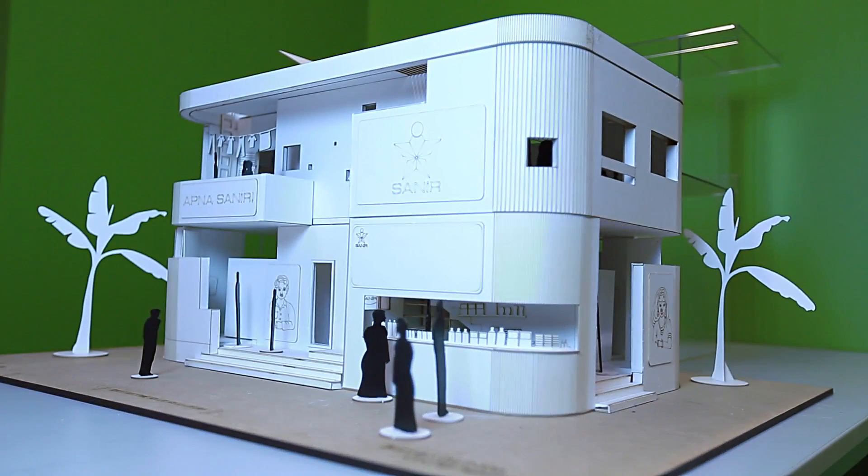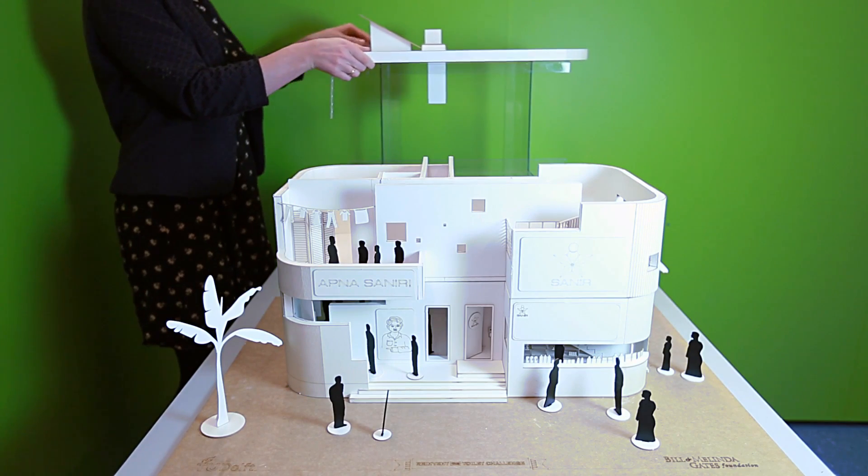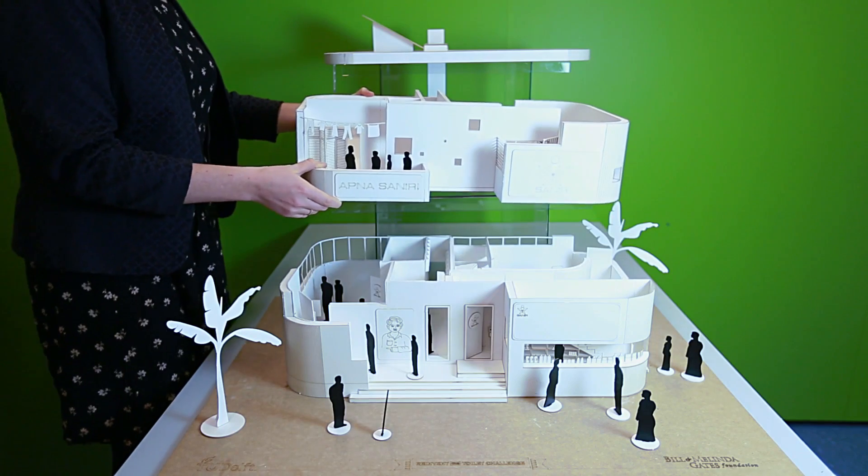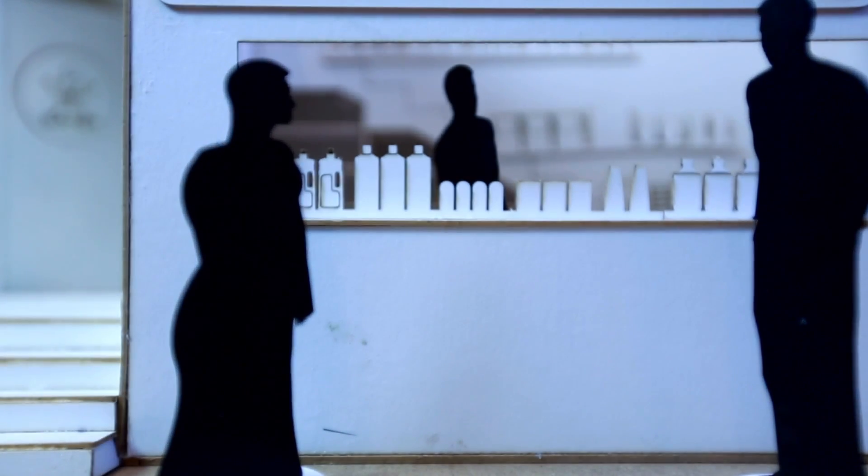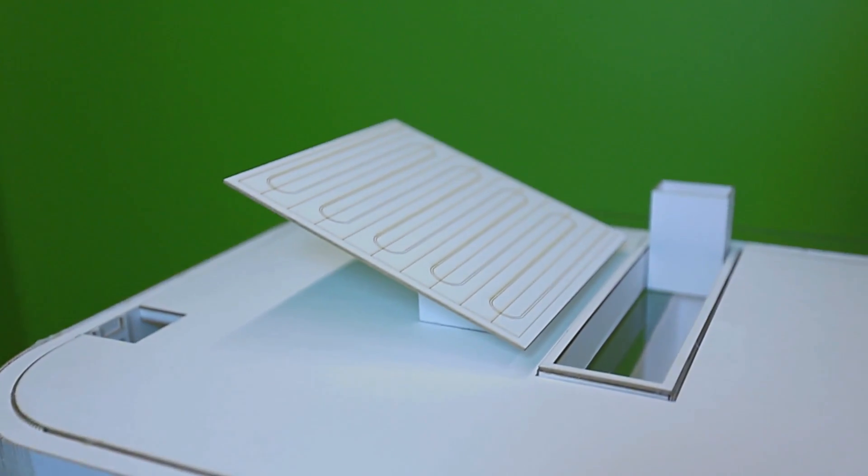We're proposing a community sanitation center. A shared toilet within one neighborhood provides toilets to 300 people. Moreover, it hosts a shop where people can buy personal hygiene products, a place where women can wash their menstrual cloths, and a grey water system.